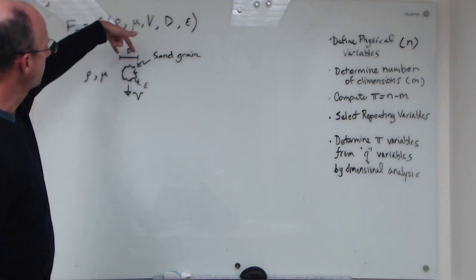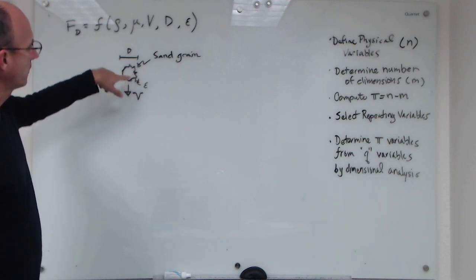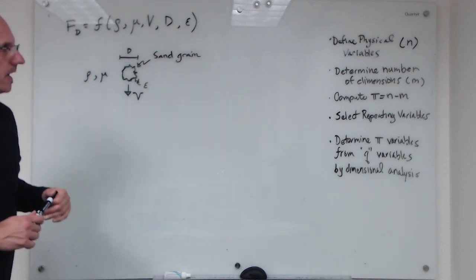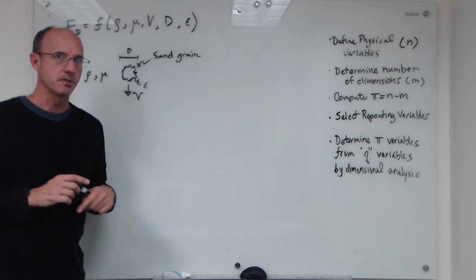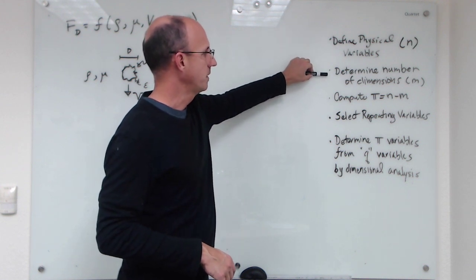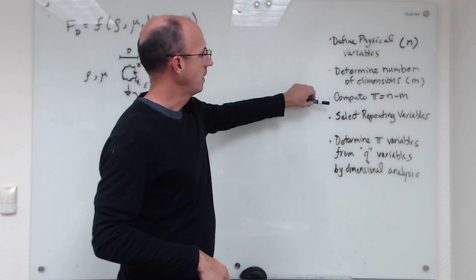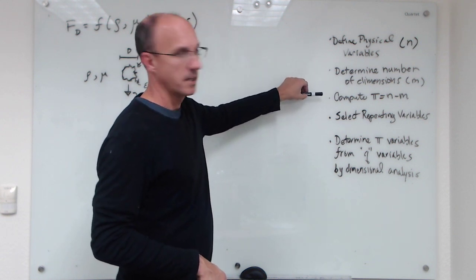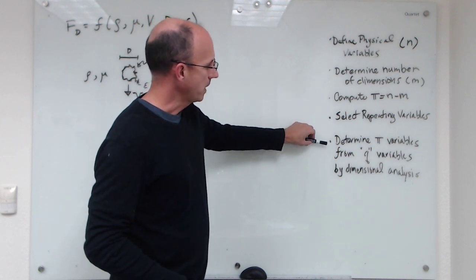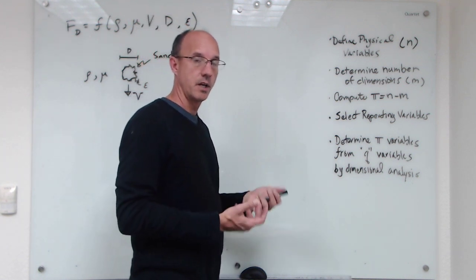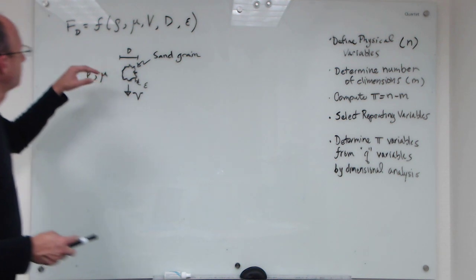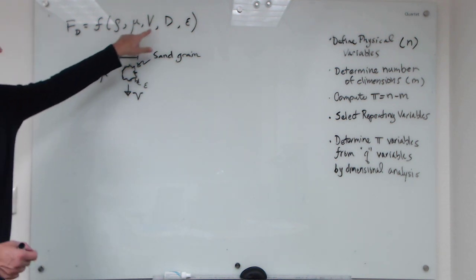The grain of sand has an irregular shape with roughly a diameter d and an irregular surface characterized by a roughness epsilon. On the right hand side are the steps we want to go through for this dimensional analysis exercise. The first step is to define physical variables and determine the number of dimensions in those variables. Then we compute the number of pi terms as n minus m, and select repeating variables from the remaining variables.